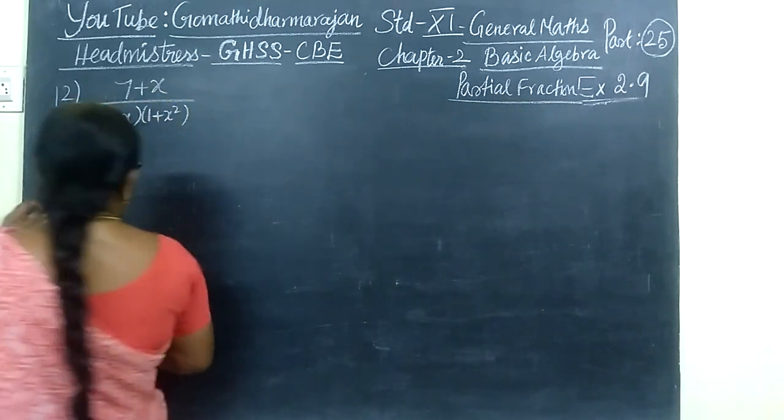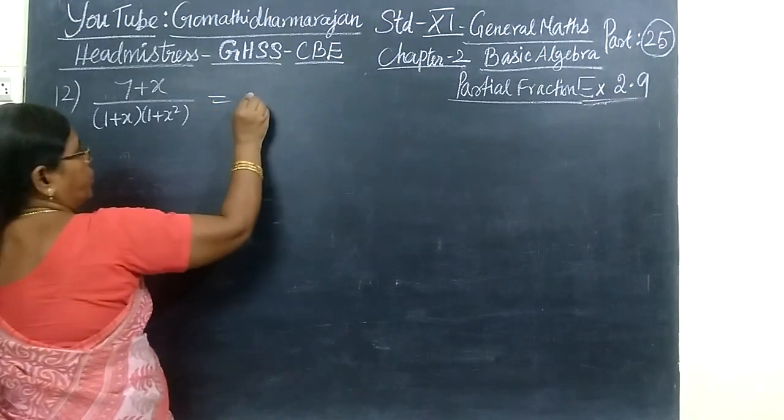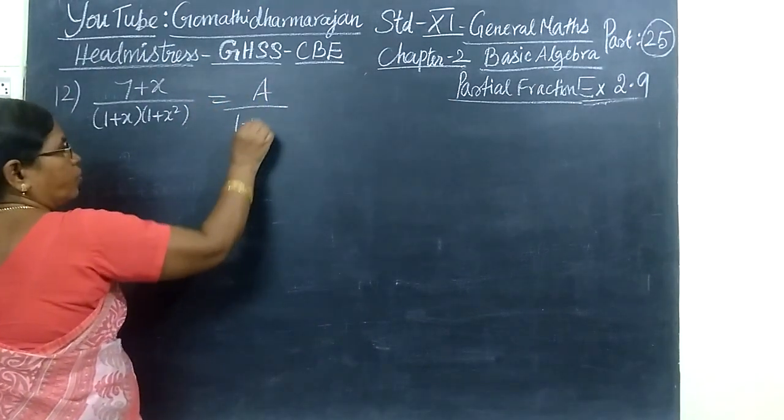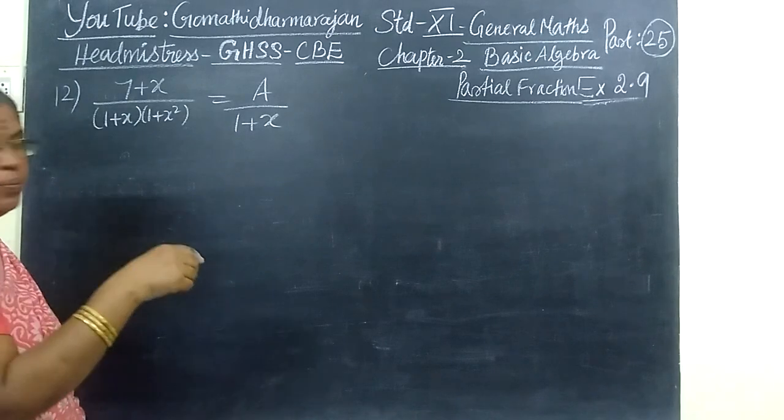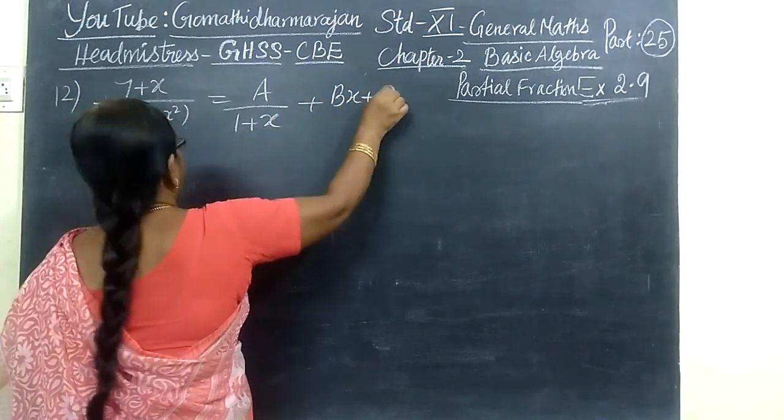Now we see the 12th question. This is very simple. This can be written as A by 1 plus x, this is of type 1, then plus Bx plus C over the quadratic equation.